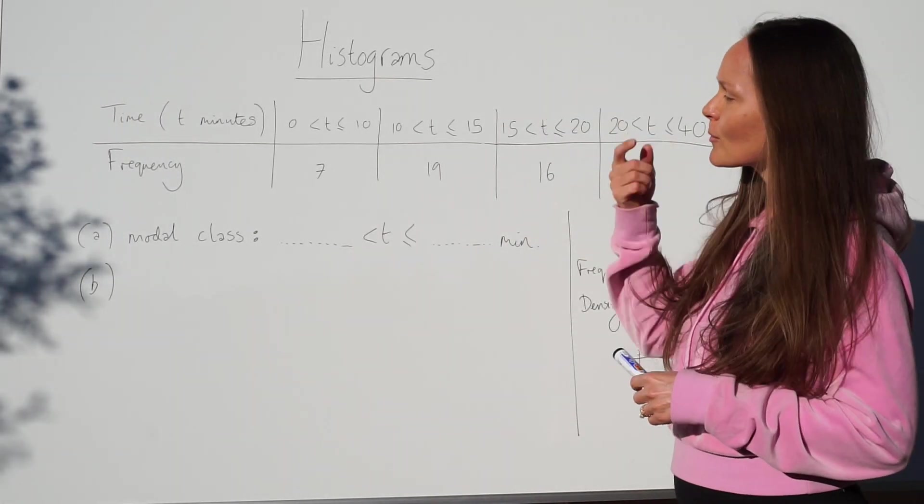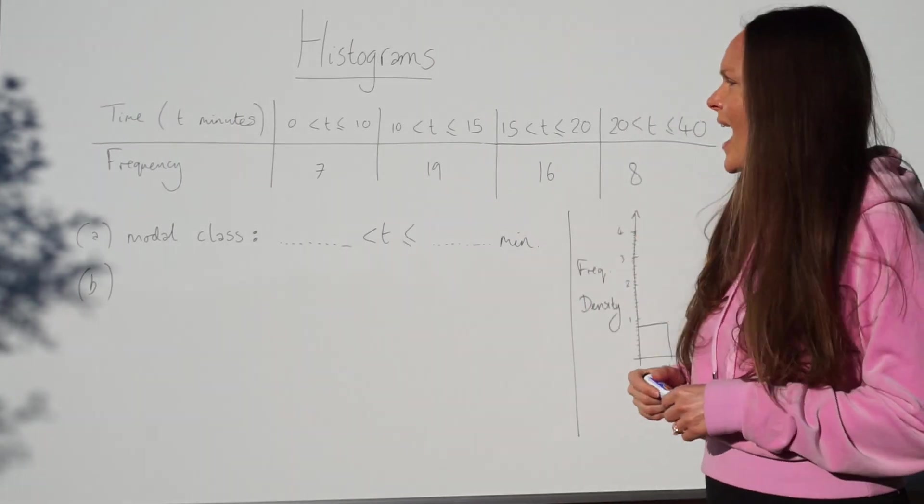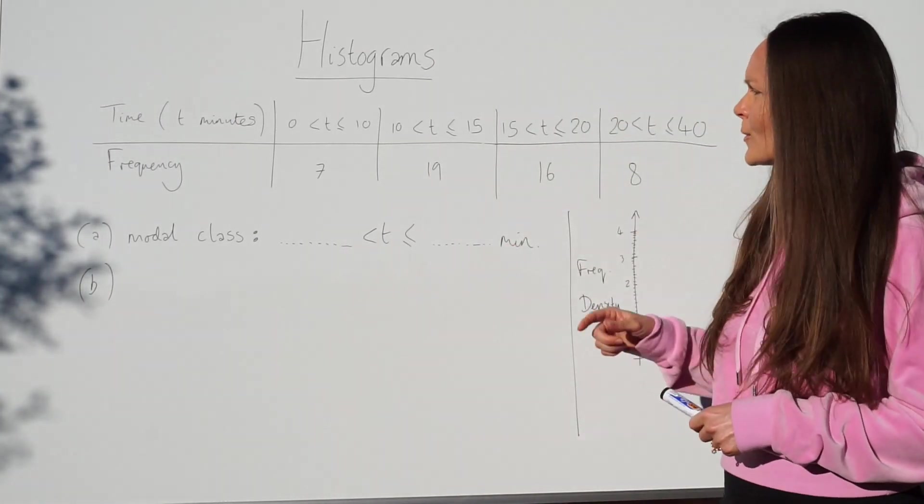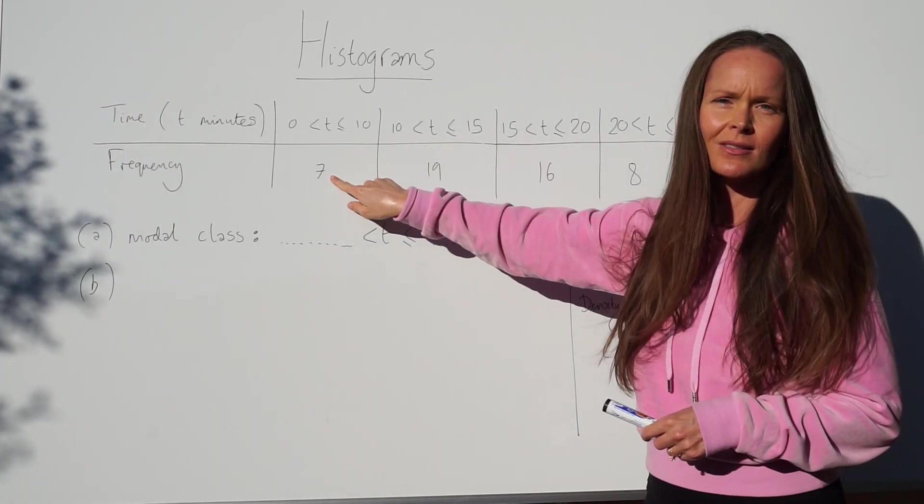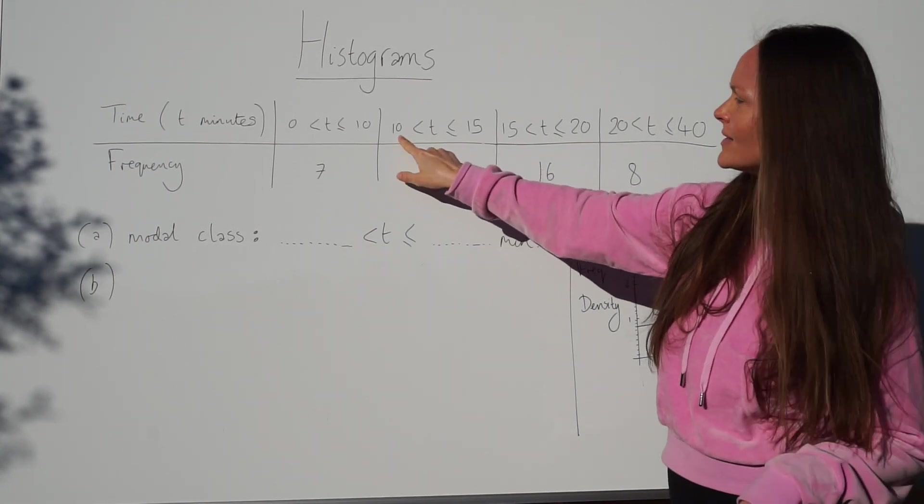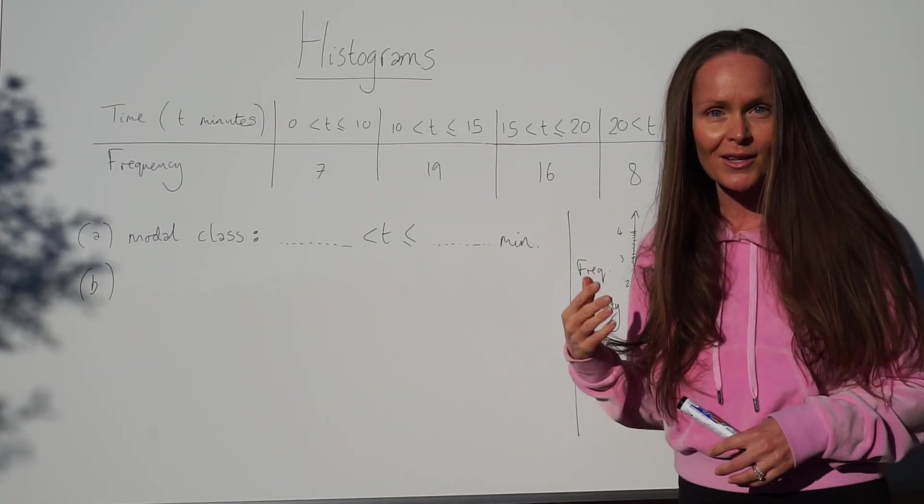In this exam question we're given a frequency table that tells us how long it takes students to get to school. So it just means that seven students take between zero and ten minutes to get to school, nineteen students take between ten and fifteen minutes to get to school, and so on.